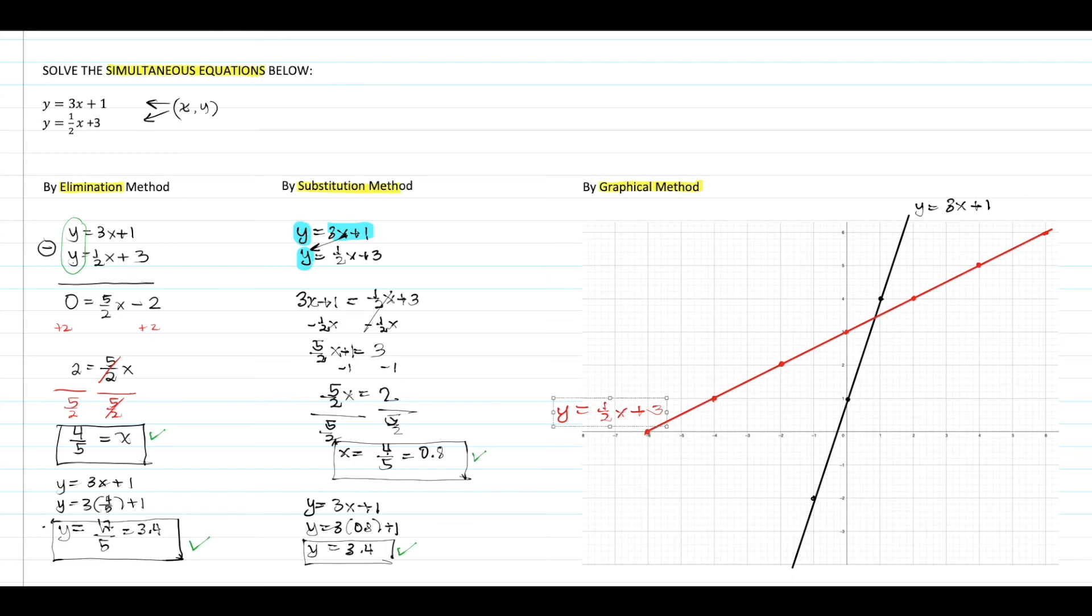What do you notice about the two lines? Yes, they intersect at this point where the x value is 0.8 and the y value is 3.4. All three methods agree on the same thing: the resulting x value and the corresponding y value are both shared by the two equations. Thus, we call these values the solutions of this set of simultaneous equations.